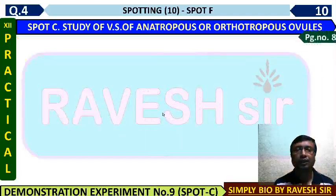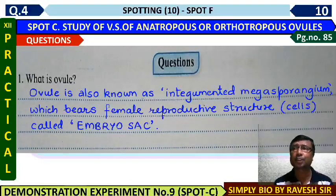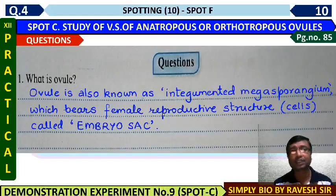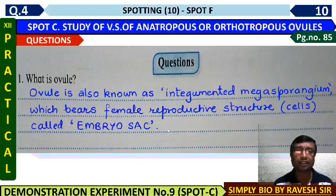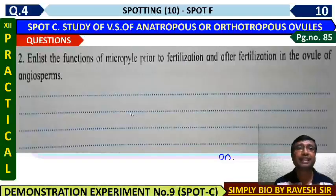Now, questions from page 85. What is an ovule? The ovule is called an integumented megasporangium, just as the anther is called a microsporangium. The ovule is the corresponding structure in the female reproductive part, inside which the embryo sac forms — a multicellular, seven-celled, eight-nucleated structure.